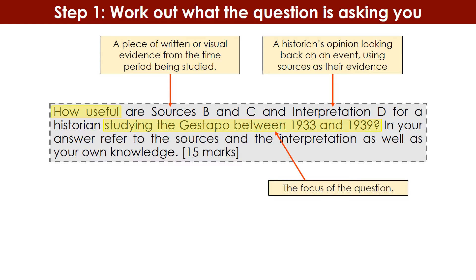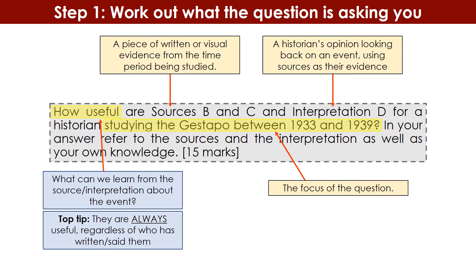The focus of this specific question is: 'How useful are they to studying the Gestapo between 1933 and 1939?' The highlighted bits — the Gestapo, and 1933 to 1939 — will be the focus of your answer. When the exam board asks 'how useful,' they mean what can we as historians learn from the sources and interpretation about the event. As a top tip, always say that the sources and interpretation are useful regardless of your personal opinions about sources B, C and interpretation D.